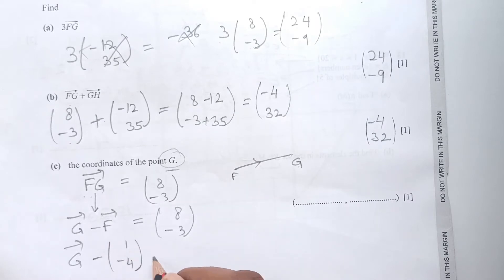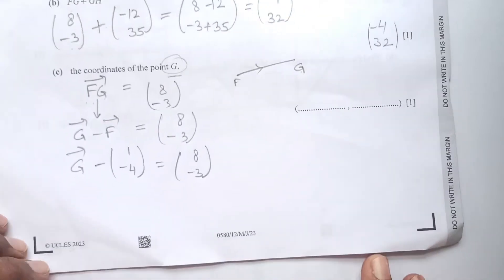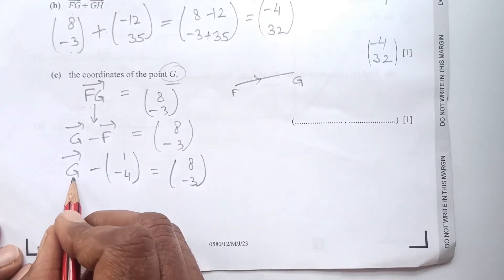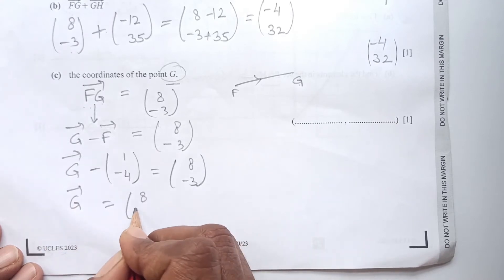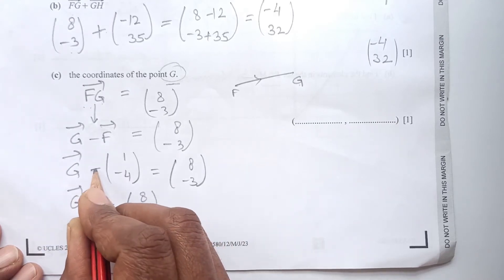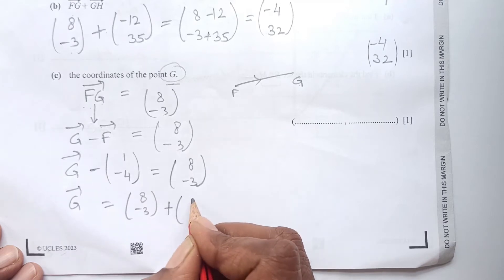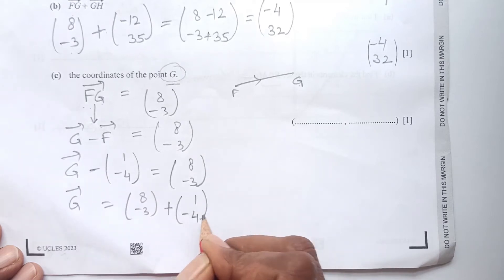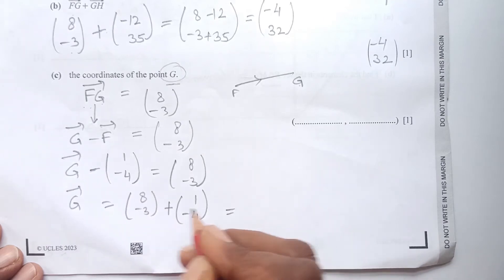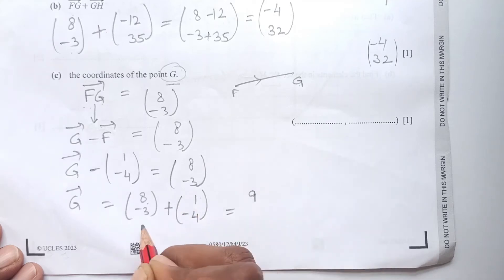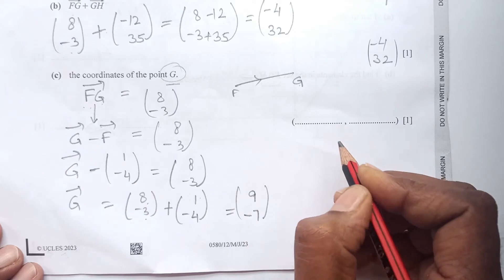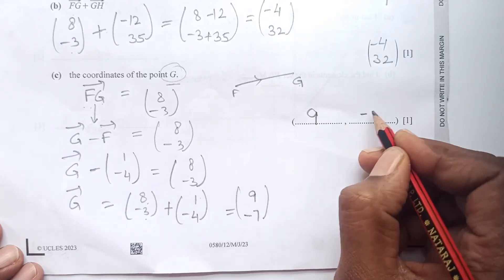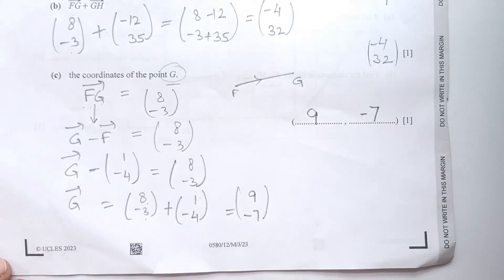So G minus (1, -4) = (8, -3). Shifting (1, -4) to the other side: G = (8, -3) + (1, -4). So 8 + 1 = 9, and -3 + (-4) = -7. The coordinate of G is (9, -7).